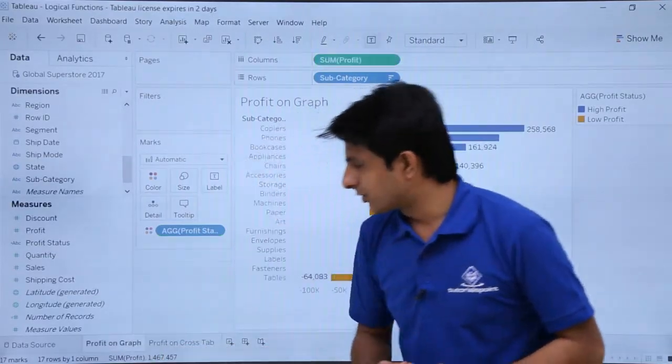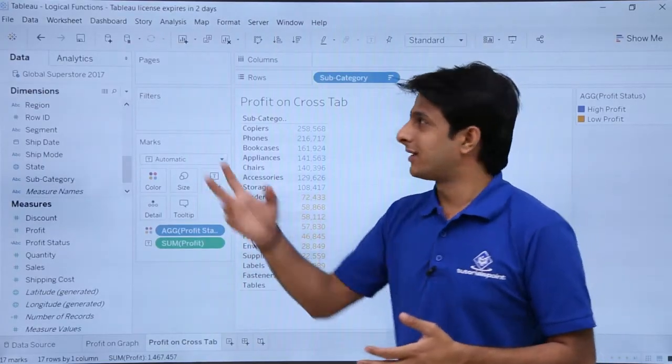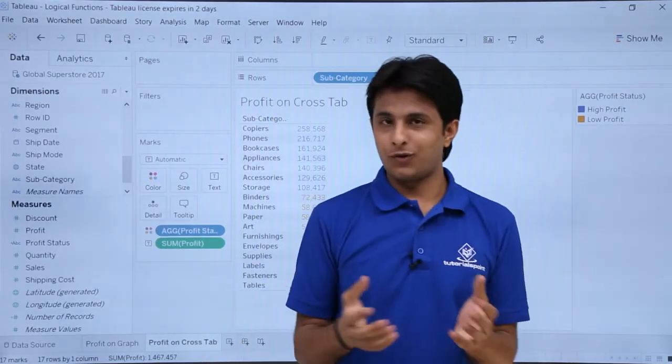So I hope you have understood how to work on the profit on graph and profit on the cross tab using this if-else condition that is nothing but a logical function itself. That's all for this video.